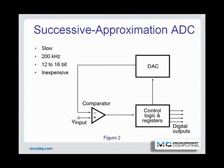Next, the second MSB, with a weight of one quarter of full scale, turns on and forces the output of the DAC to either three quarters full scale — if the MSB remained at 1 — or one quarter full scale if the MSB reset to zero. The comparator once more compares the DAC output to the input signal, and the second bit either remains on if the DAC output is lower than the input signal, or resets to zero if the DAC output is higher. The third MSB is then compared the same way, and the process continues in order of descending bit weight until the least significant bit, or LSB, is compared. At the end of the process, the output register contains a digital code representing the analog input signal.